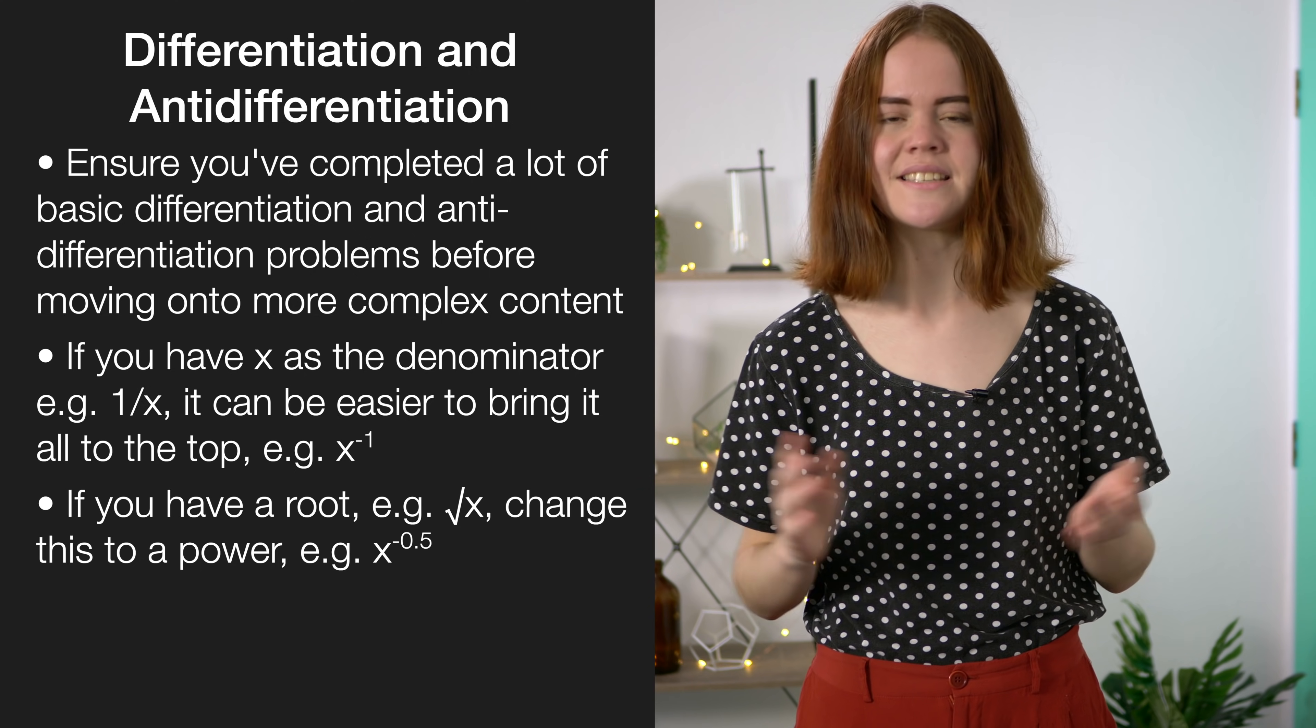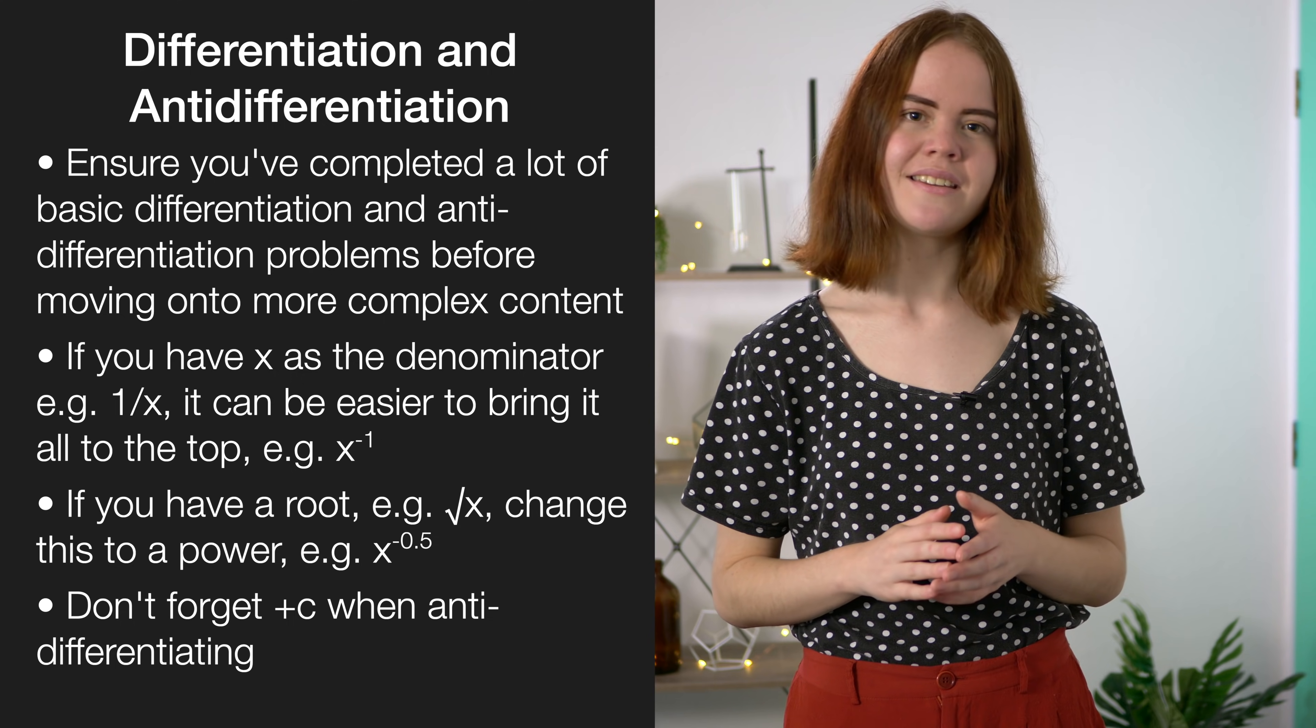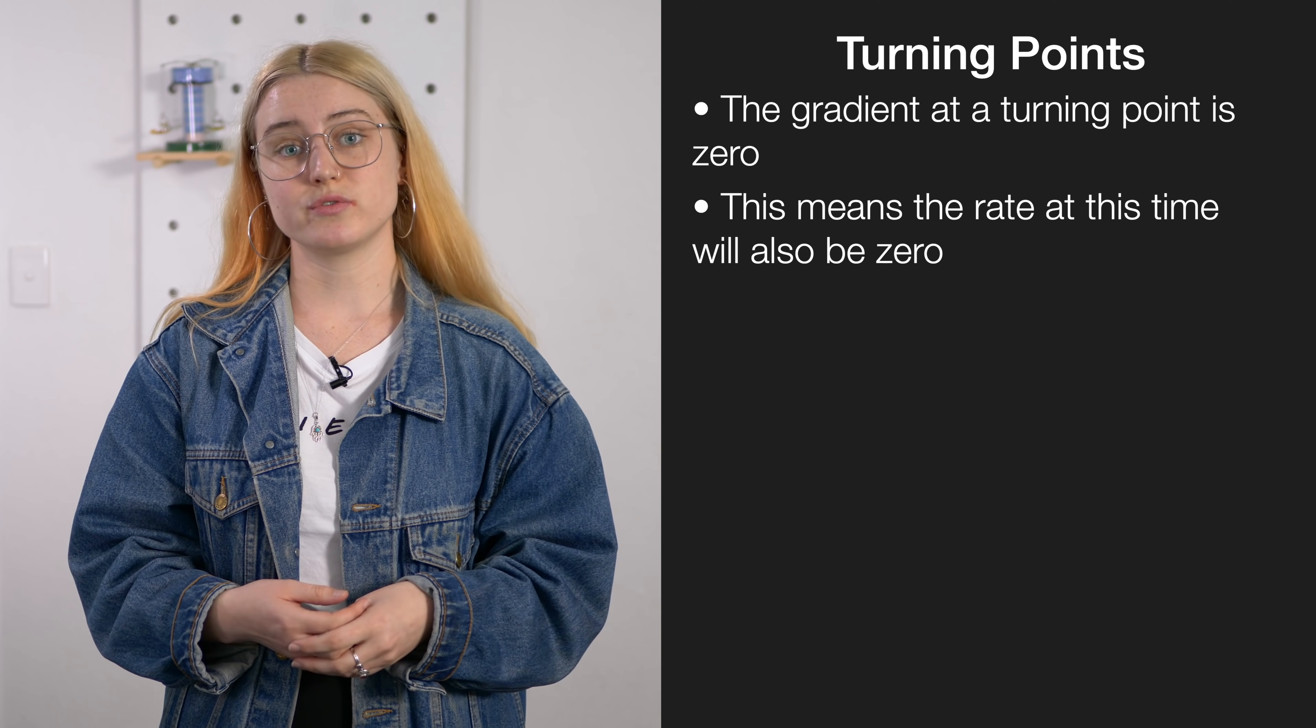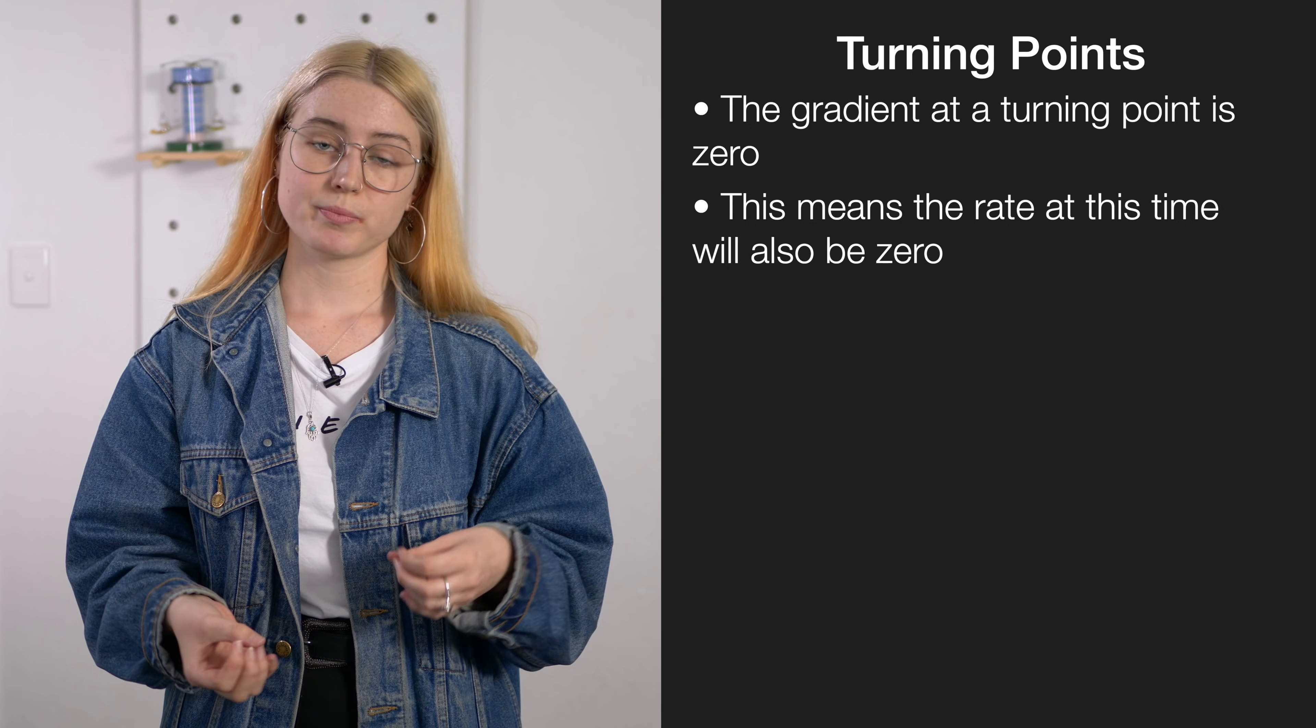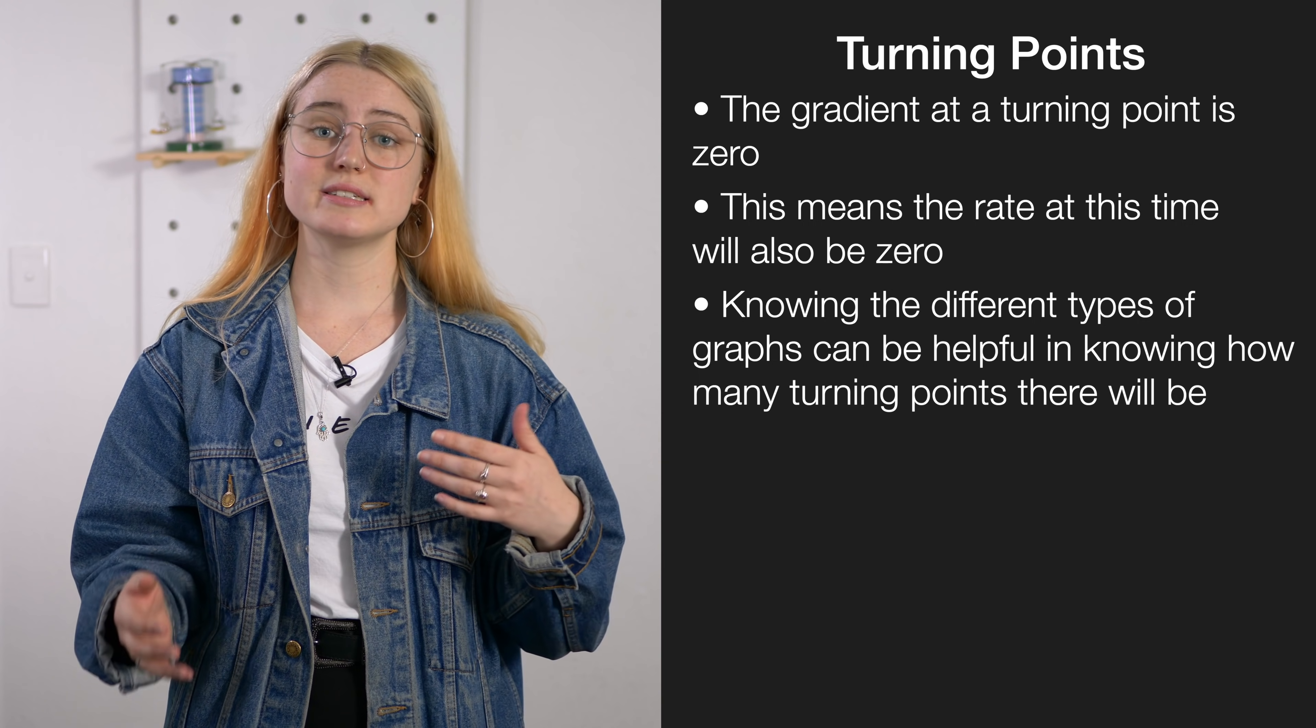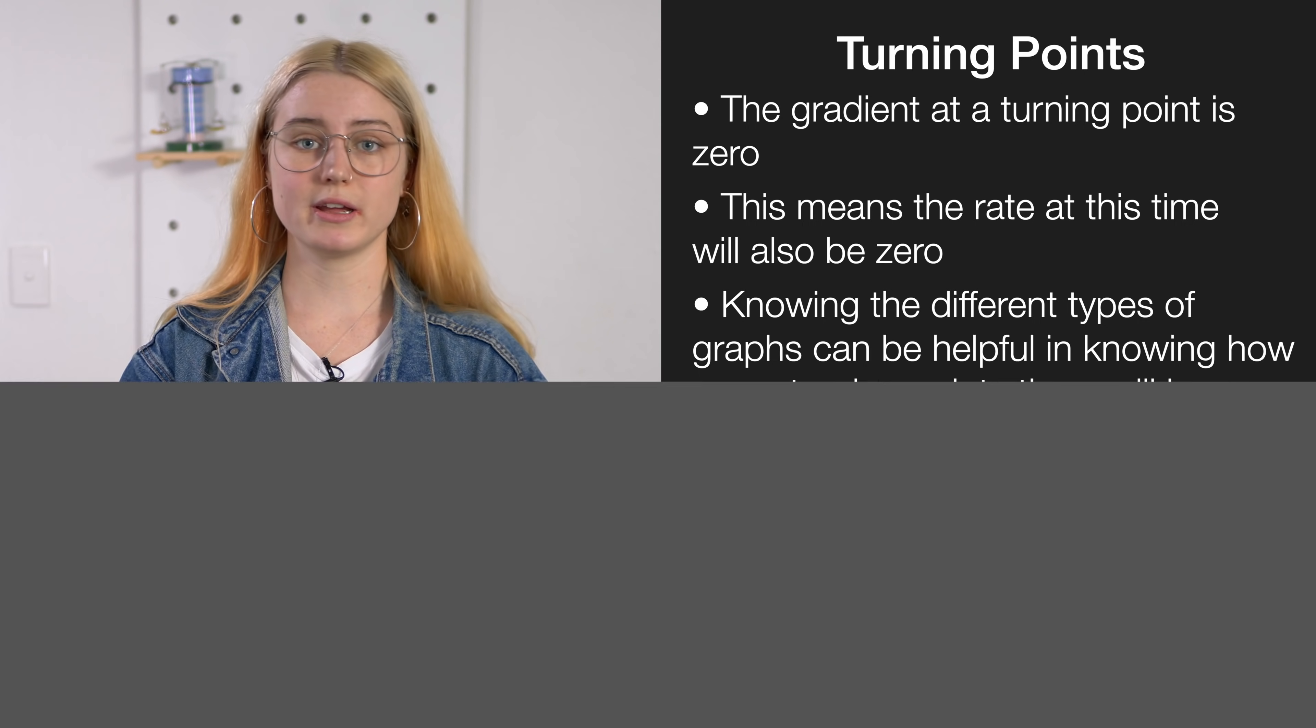And lastly, we can't stress this enough, don't forget the plus c when you're anti-differentiating. A question NCEA almost always throws in is about local minimums and maximums on your graph, and this is what we call our turning points. Now the gradient at a turning point is zero, and what this means is that the rate at this point of time is also going to be zero. Being familiar with the different types of graphs can also be really helpful in understanding how many turning points there are going to be.